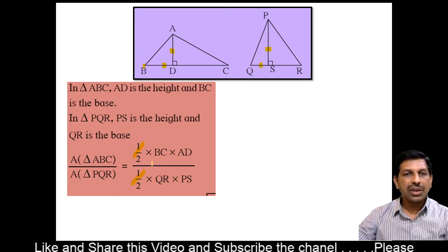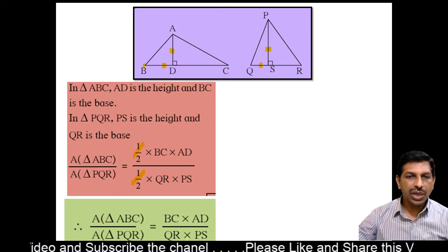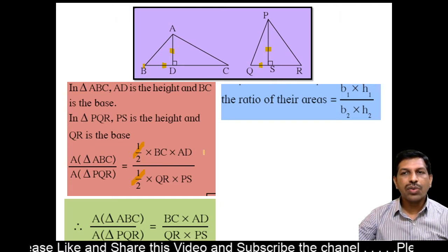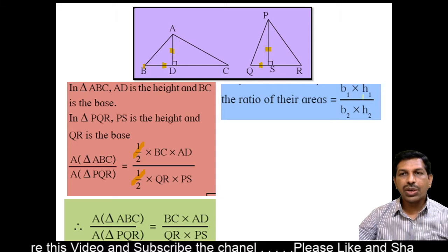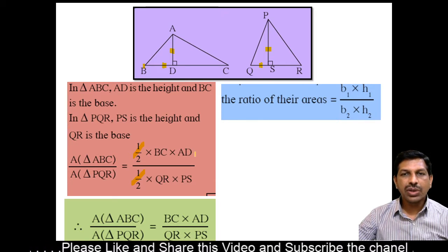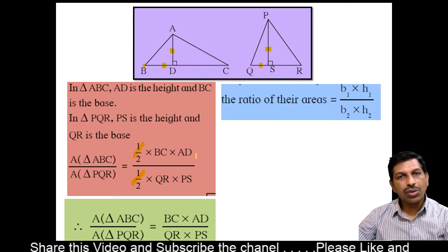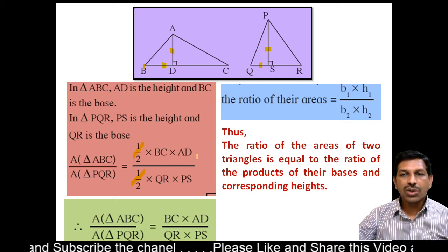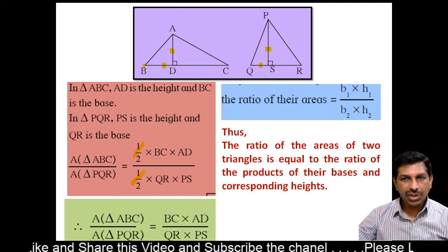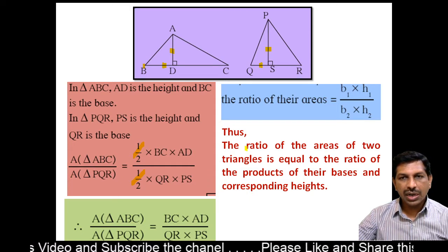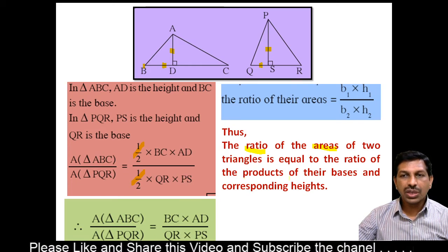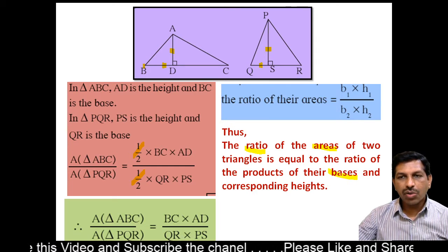And we get the ratio as: area of triangle ABC to area of triangle PQR is equal to BC into AD upon QR into PS. Thereby we conclude the result: ratio of the areas of the triangles is equal to B1 into H1 upon B2 into H2, where B1 and B2 are the bases and H1 and H2 are the heights of the corresponding triangles.